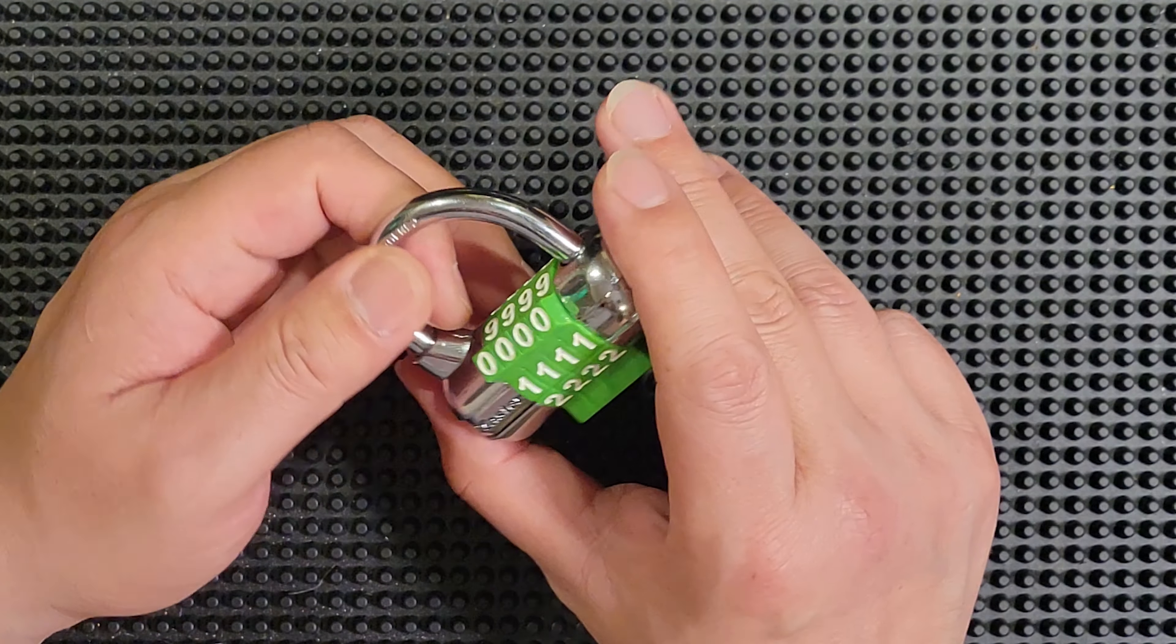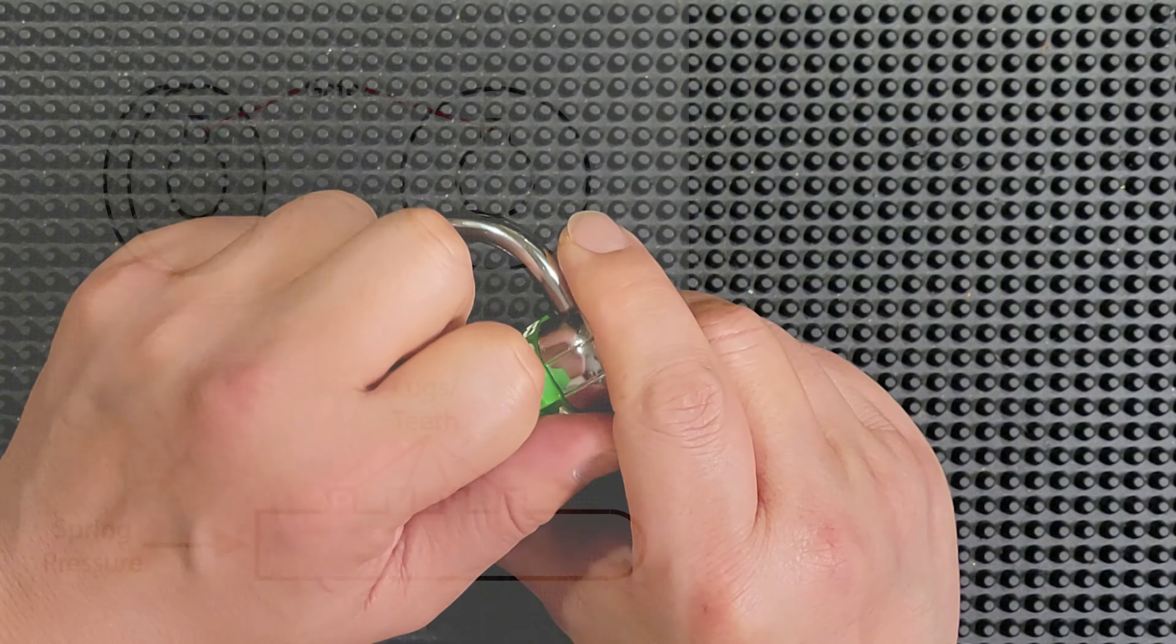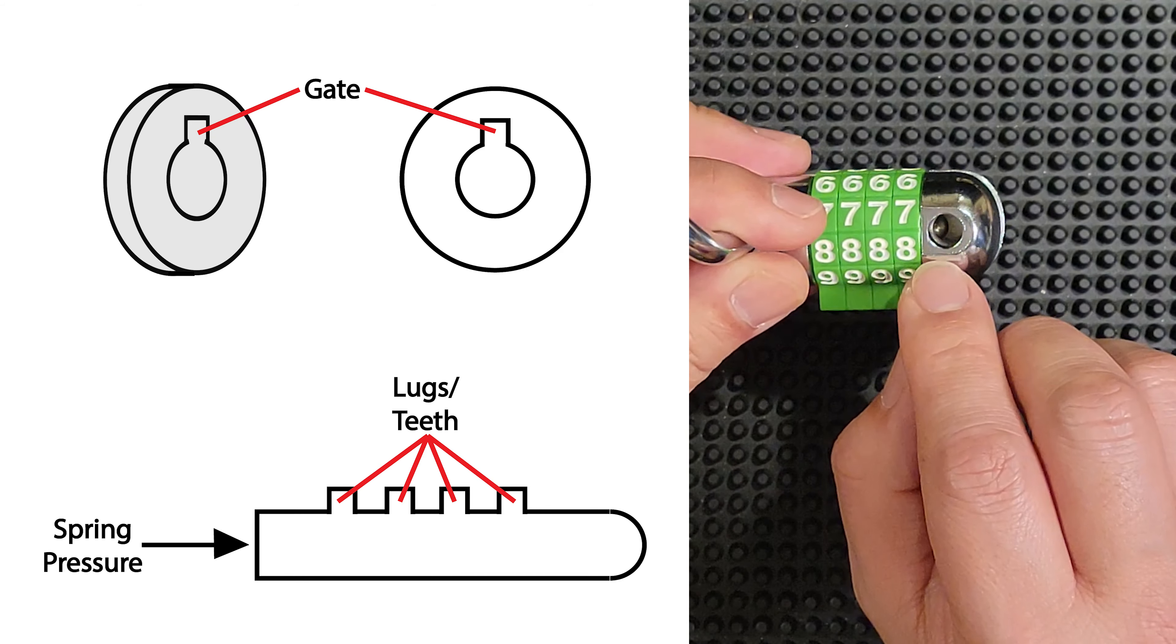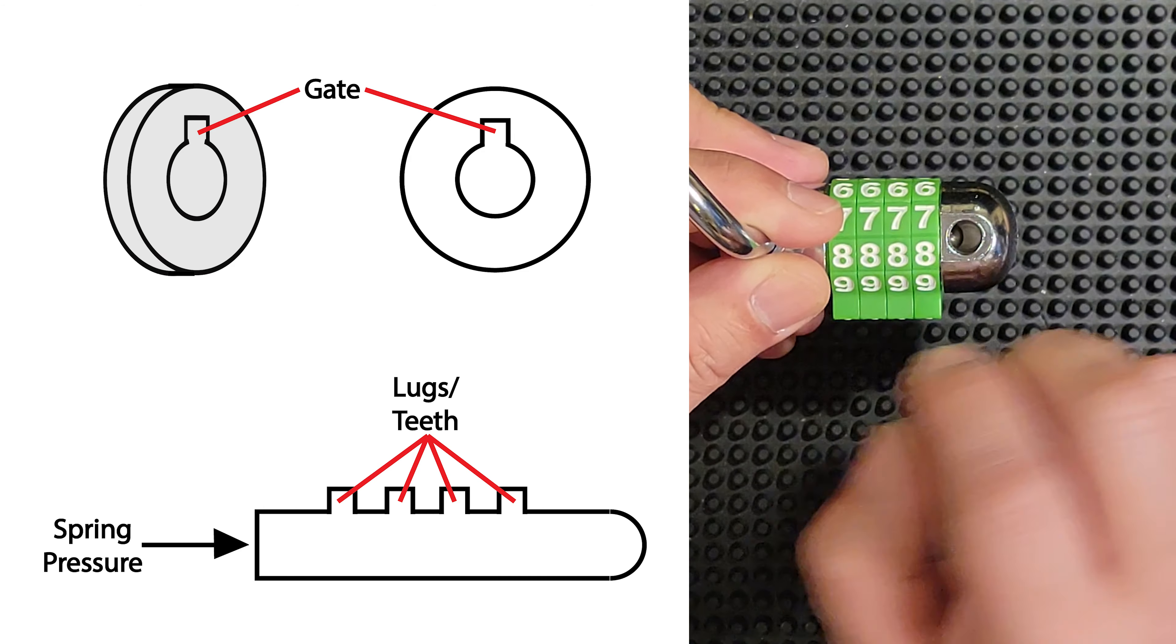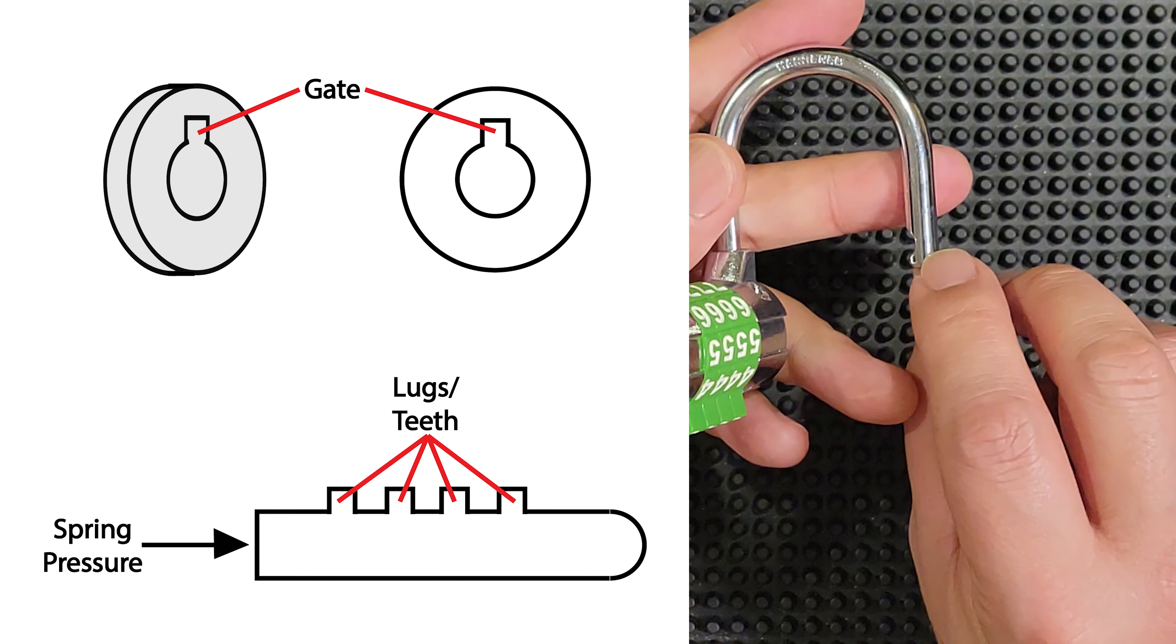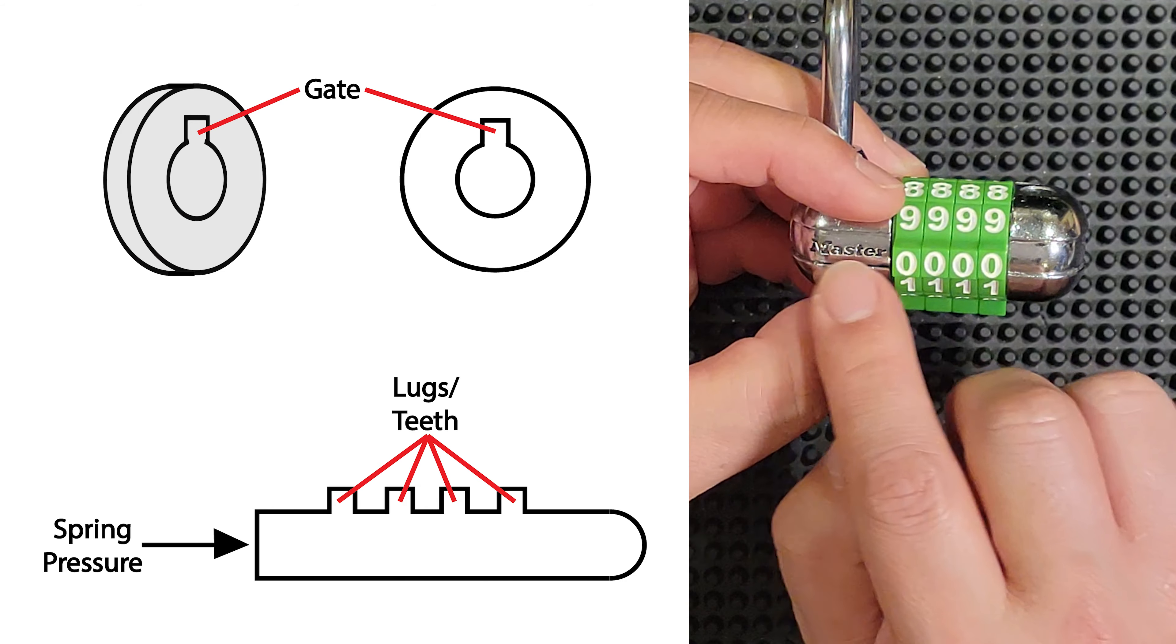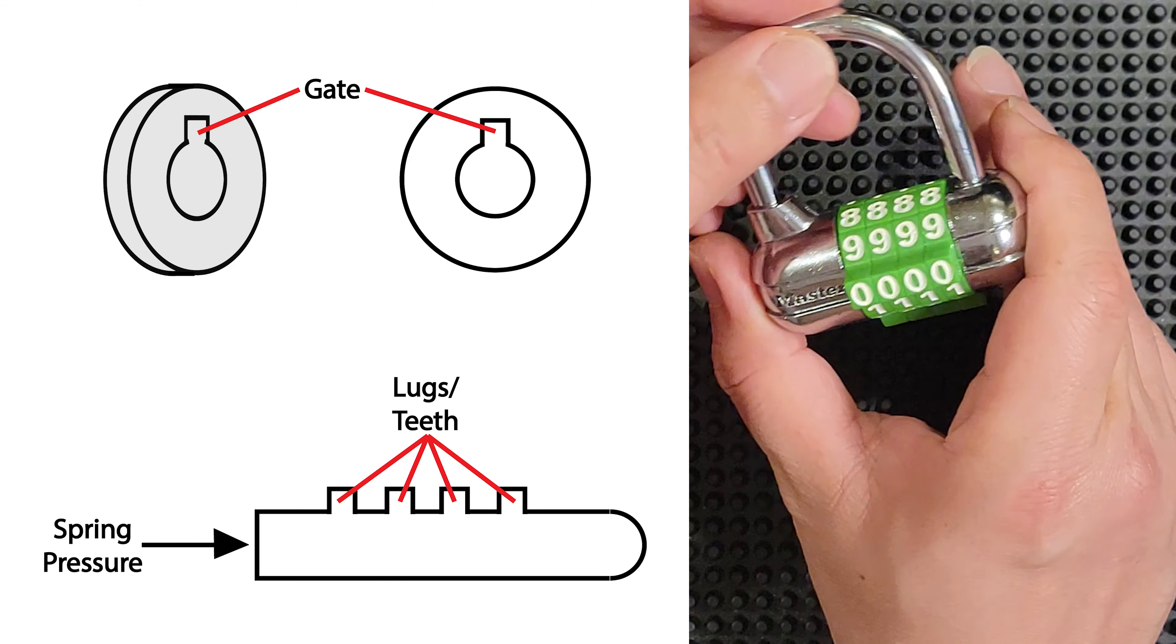Okay, the way this works is that there is a rod that runs through the center of the code wheels. And that rod has a rounded end. Maybe you can see down in the shackle hole there, and you can see the rounded end of the rod. And that rounded end interfaces with this cutout, this notch cut into the shackle.